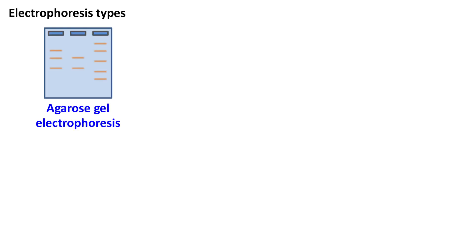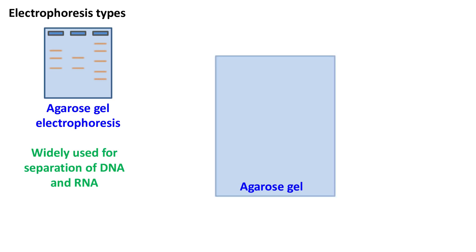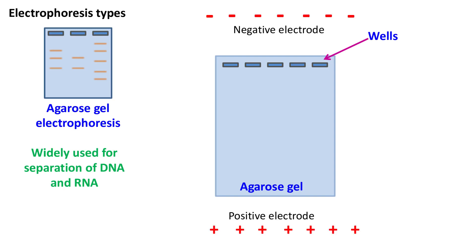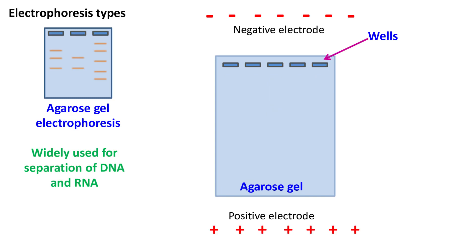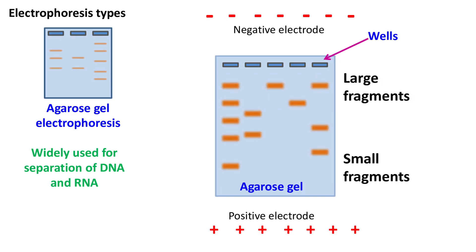Agarose gel electrophoresis is widely used for the separation of DNA and RNA. The agarose gel has small wells where the samples are loaded. Because DNA and RNA have negative charge, the wells of agarose gels are kept towards the negatively charged electrodes. The movement of DNA or RNA occurs from the negative to the positive electrode. DNA fragments that are small in size migrate faster compared to DNA fragments that are large.